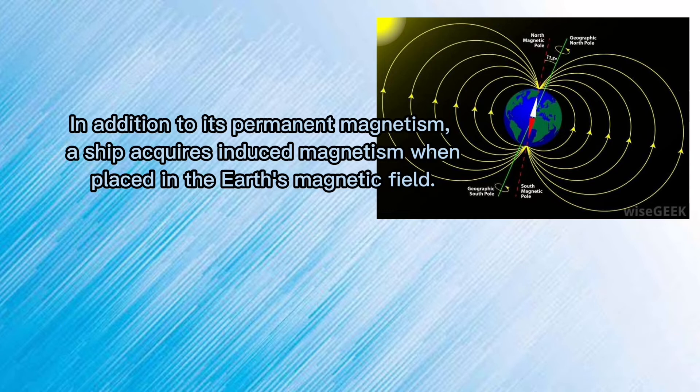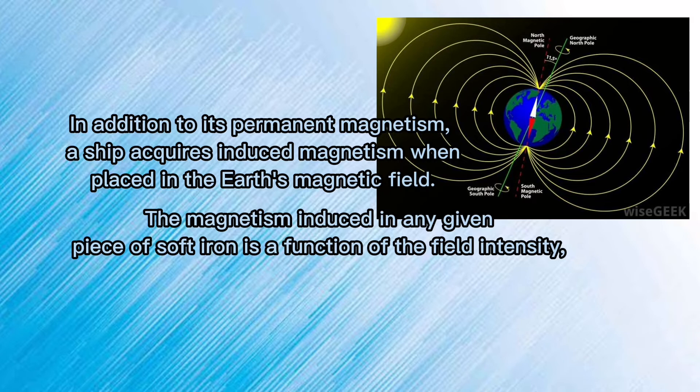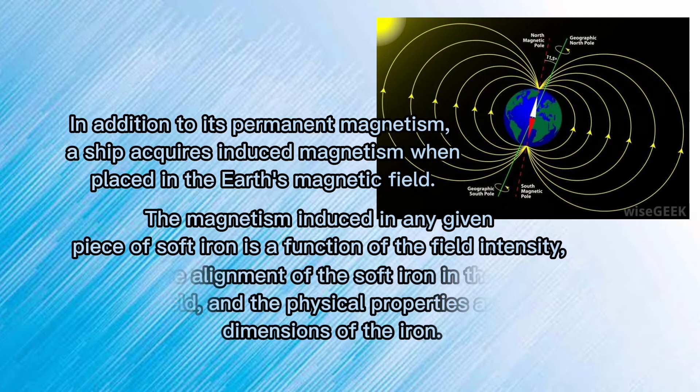In addition to its permanent magnetism, a ship also has induced magnetism when placed in the Earth's magnetic field. The magnetism induced in any given piece of soft iron is a function of the field intensity, the alignment of the soft iron in the field, and the physical properties and dimension of the iron.